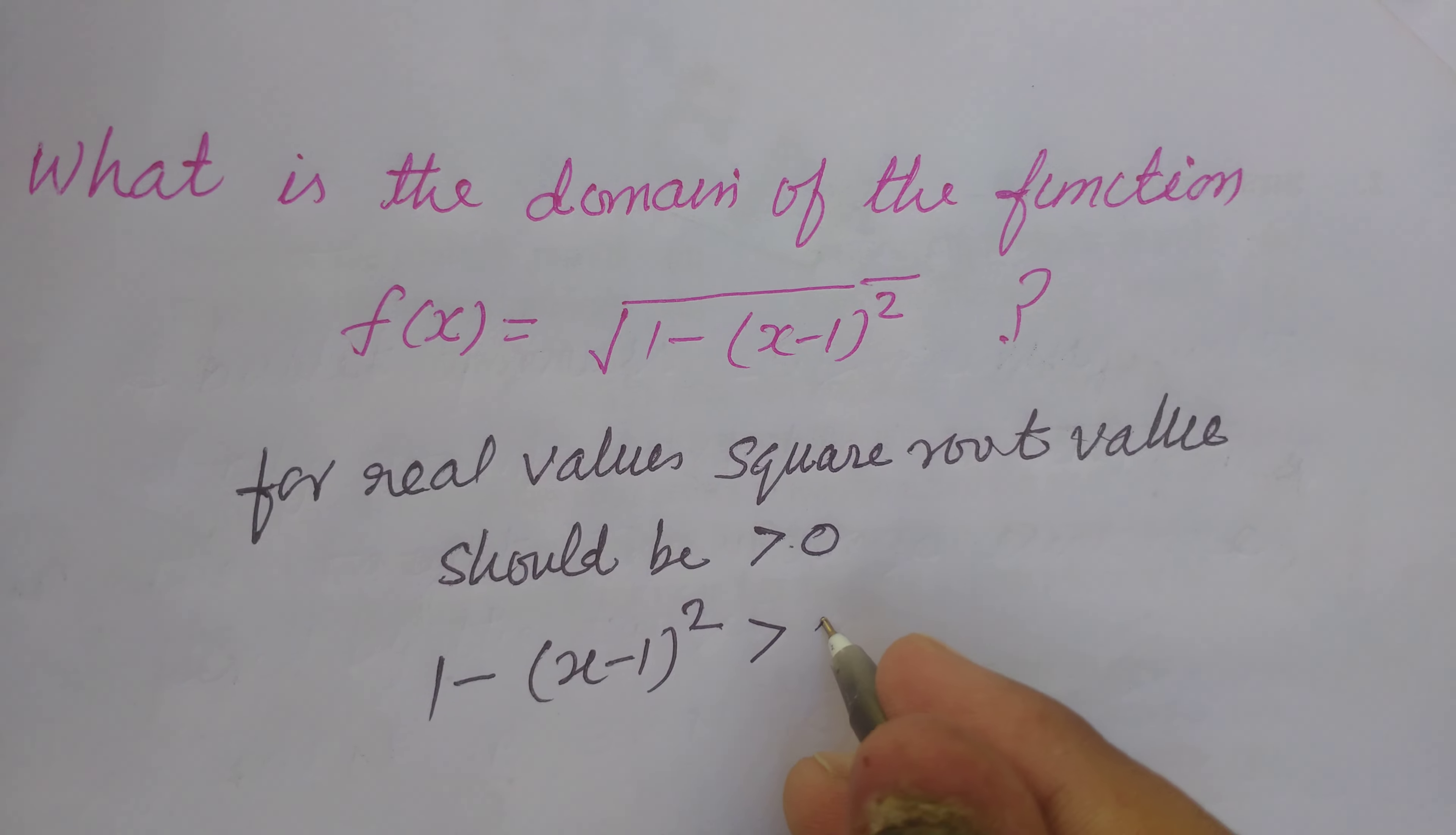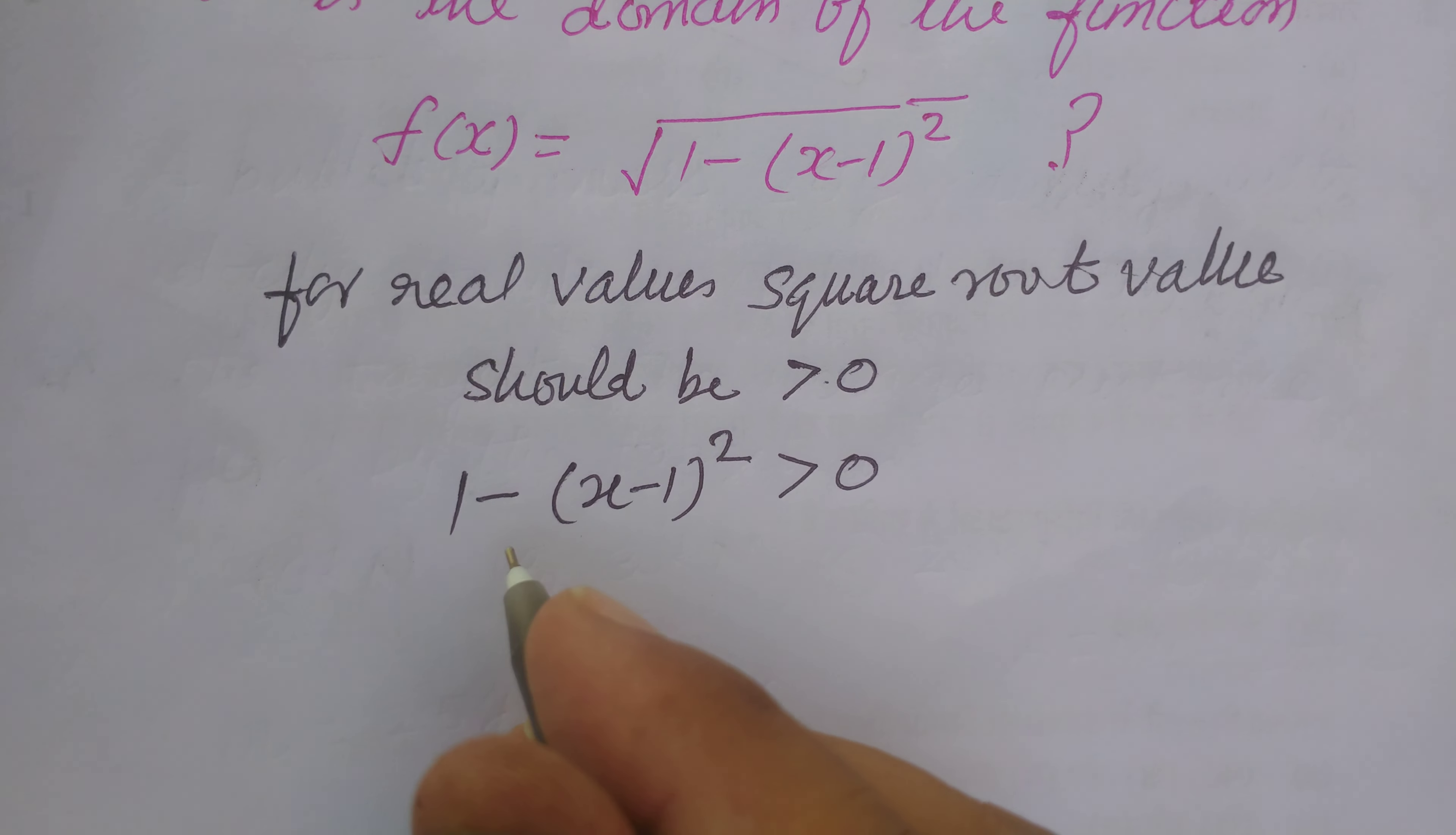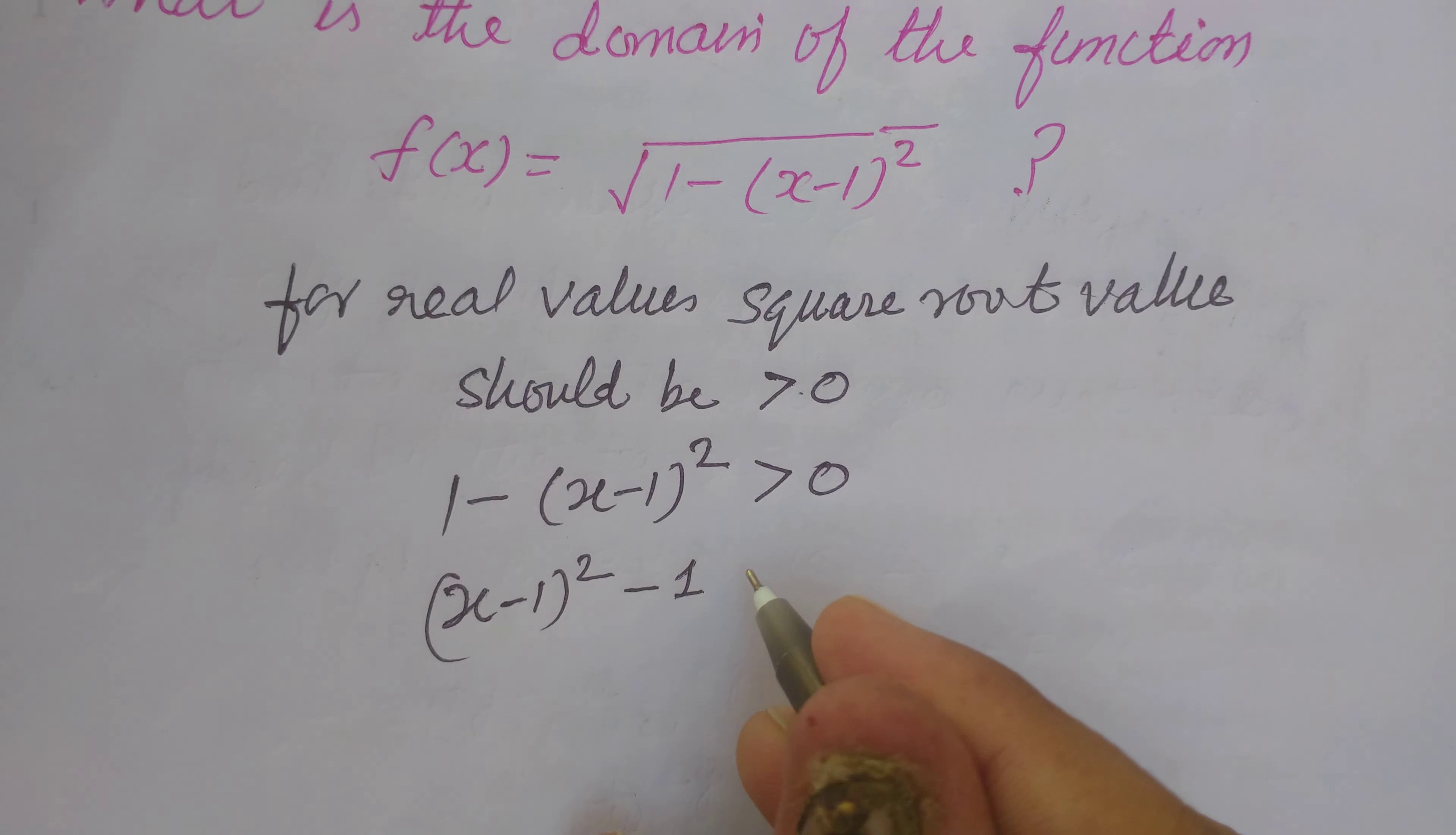You can write it as (x-1)² - 1 is less than zero.